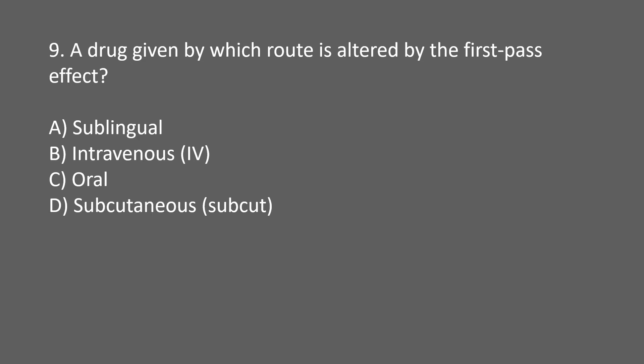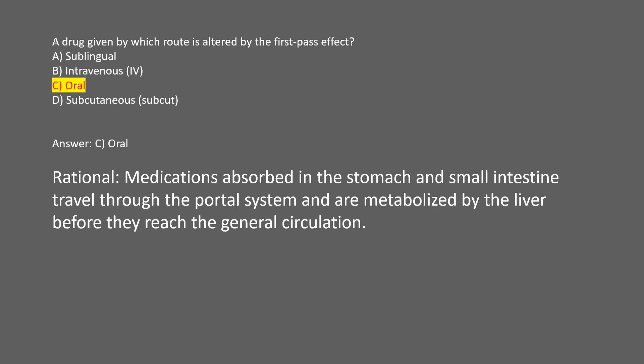A drug given by which route is altered by the first-pass effect? A. Sublingual. B. Intravenous (IV). C. Oral. D. Subcutaneous. Answer: C. Oral. Rational: medications absorbed in the stomach and small intestine travel through the portal system and are metabolized by the liver before they reach the general circulation.